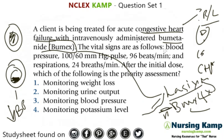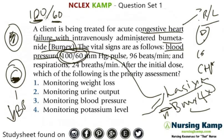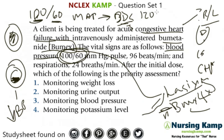The vital signs are: blood pressure 160/80 — that's already somewhat low. Let's figure out the mean arterial pressure using the formula: diastolic times 2 plus systolic, divided by 3. So 60 times 2 is 120, plus systolic 100, equals 220 divided by 3 — that's about 72. So the MAP is okay.